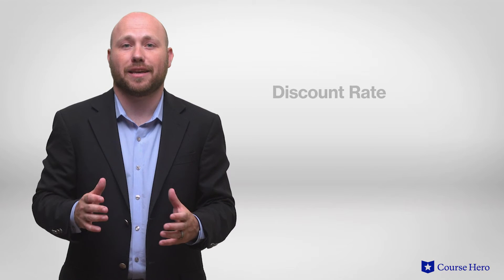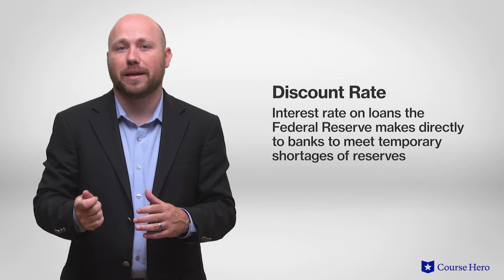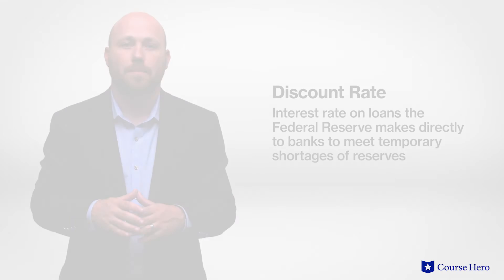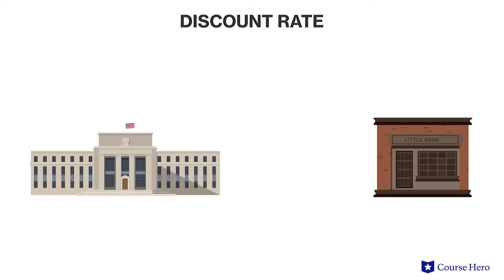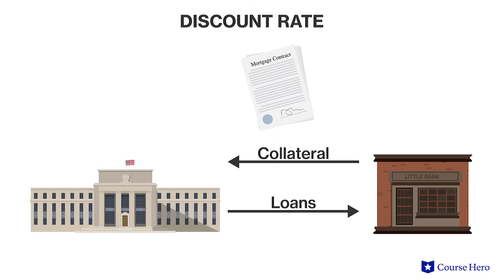Another tool available to the Fed to help assure economic stability is the discount rate — the interest rate on loans the Federal Reserve makes directly to banks to meet temporary shortages of reserves. Any bank that needs funds to meet its minimum reserve requirements can borrow from the Federal Reserve in exchange for suitable collateral such as treasury bills, mortgages, and other financial instruments held by the loanee bank.